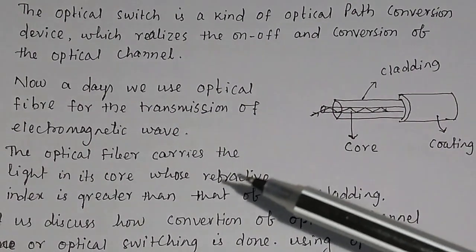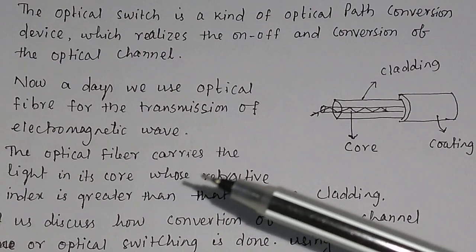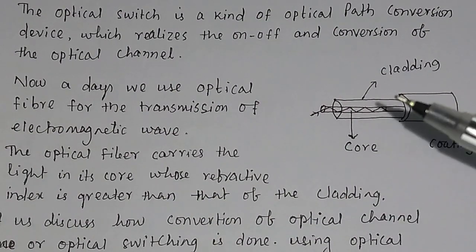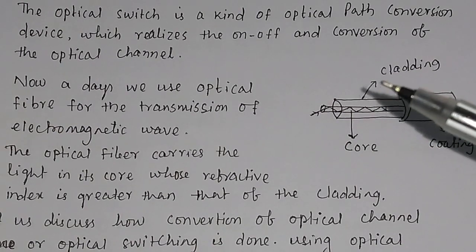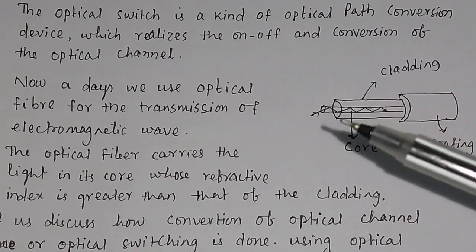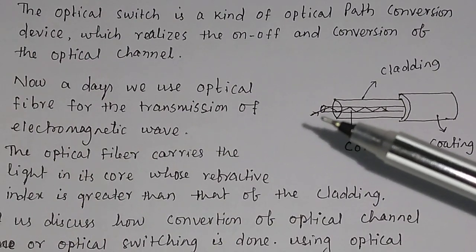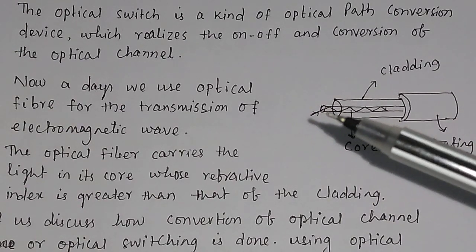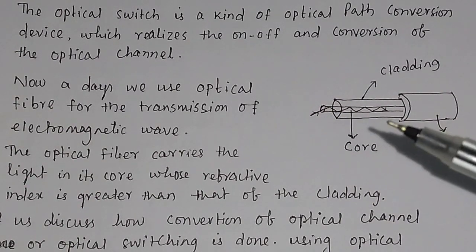The optical fiber carries the light in its core whose refractive index is greater than that of the cladding. Since the refractive index of the cladding is less than that of the core, total internal reflection takes place and using total internal reflection the light or electromagnetic wave passes through this core.